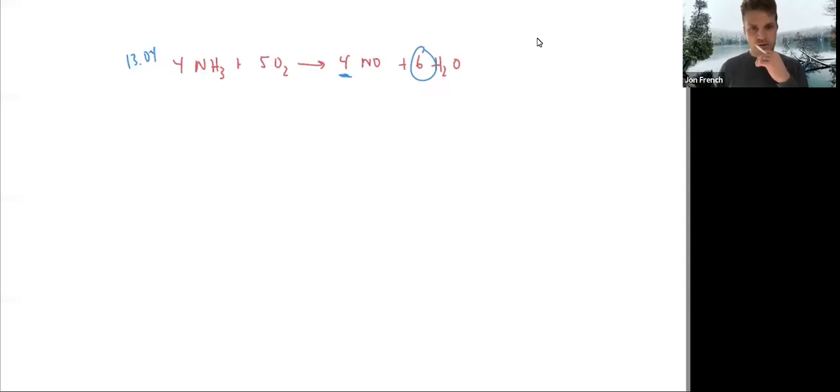So for question four, we've got the balanced reaction. We know the rate of consumption of ammonia is negative 1.4 times 10 to the minus 5 molar per second.